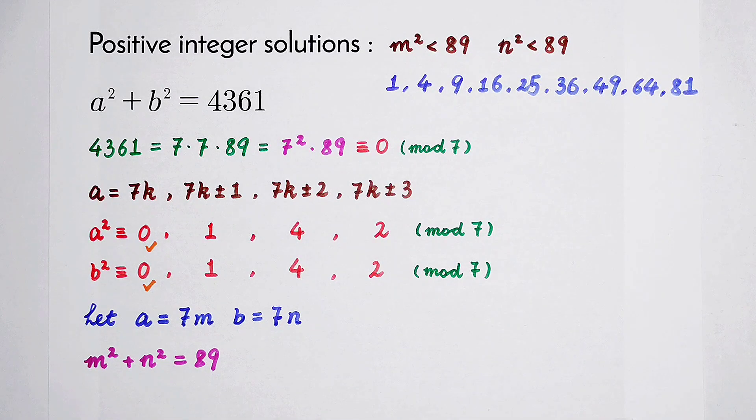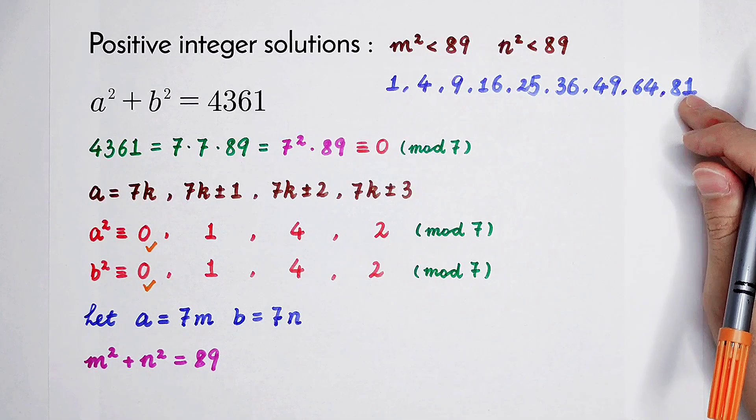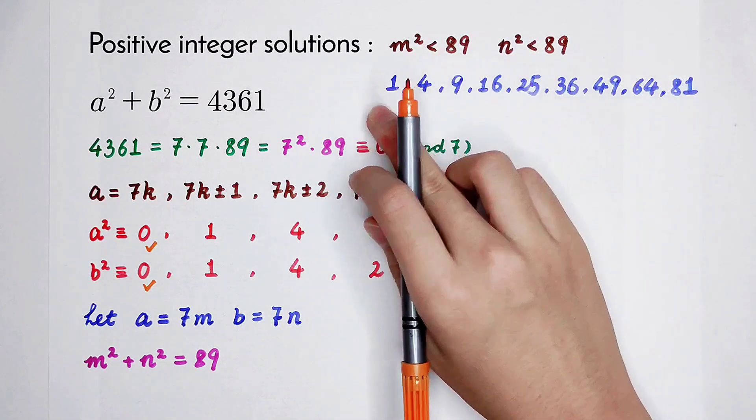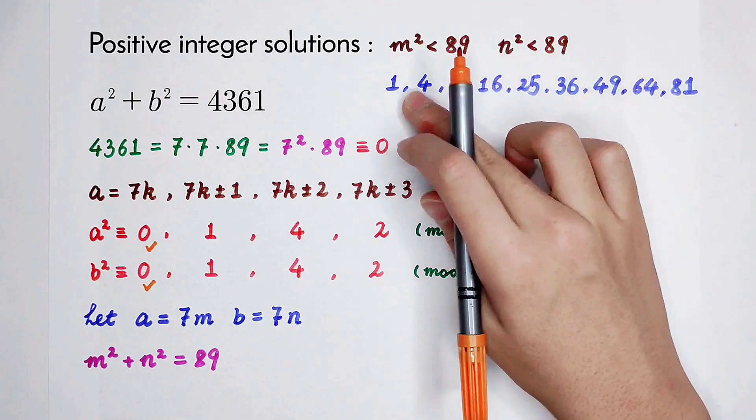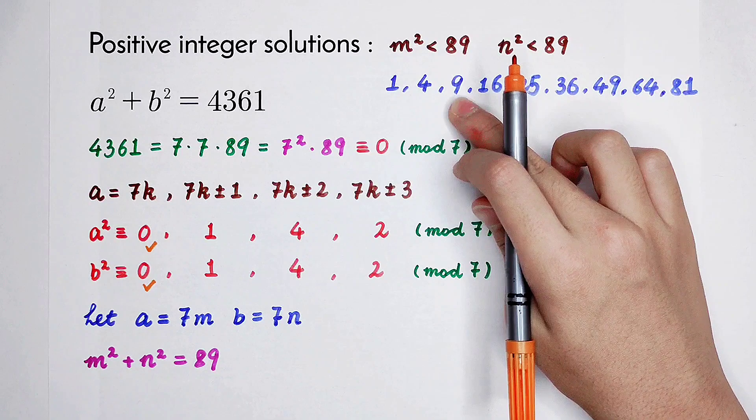Now we should use some logic. If the largest number from m squared and n squared is 81, then 81 plus 1? No. 81 plus 4? No. But 81 plus 9? It is bigger than 89.